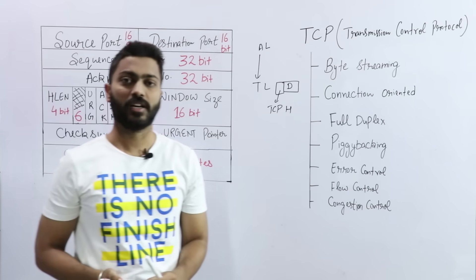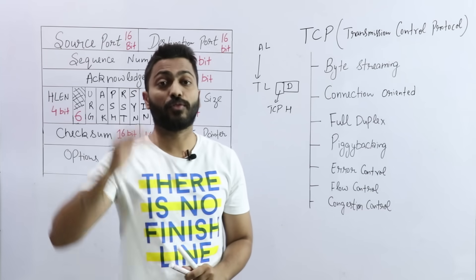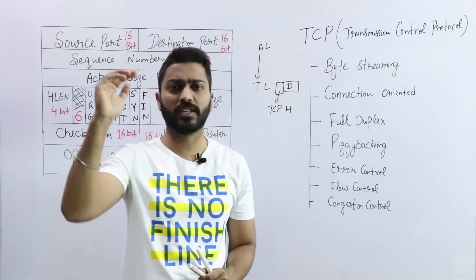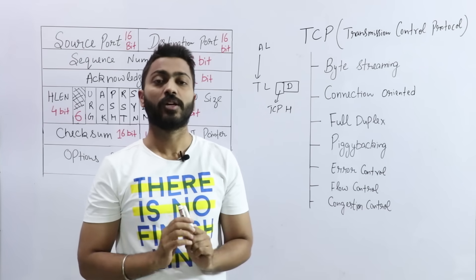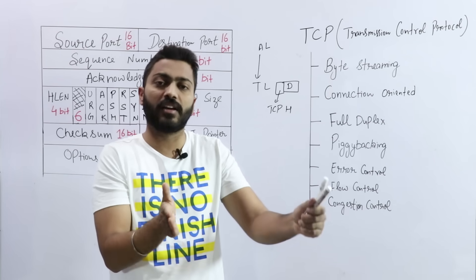Now, TCP header has advantages. Byte streaming means TCP is a byte streaming protocol. From the application layer, continuous data comes. Application layer says, transport layer, continuous data comes in, without there is any limitation. Not that there is much limitation. Application layer data comes to the transport layer.